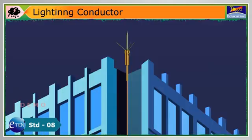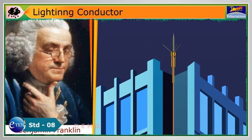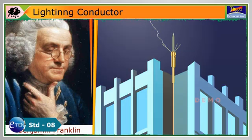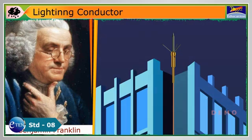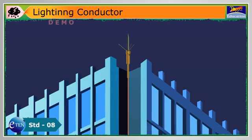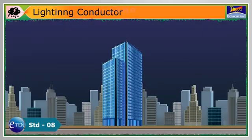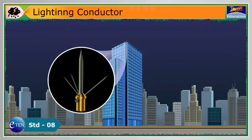Lightning conductors were originally developed by Benjamin Franklin. It is designed to protect buildings from the damage that can possibly strike. A lightning rod is very simple. It is a pointed metal rod attached to the roof of a building.